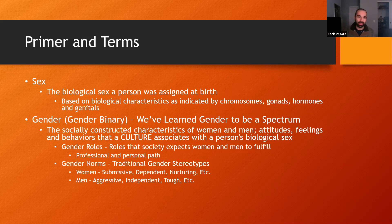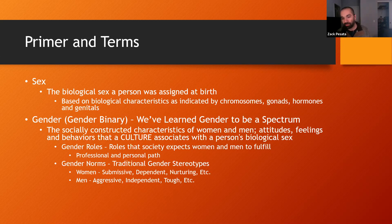Sex is the biological sex a person was assigned at birth, based on biological characteristics as indicated by chromosomes, gonads, hormones, and genitals. Gender — putting us into the terminology of the 1960s — is the socially constructed characteristics of women and men: attitudes, feelings, and behaviors that a culture associates with a person's biological sex. Gender roles are the roles that society expects women and men to fulfill.